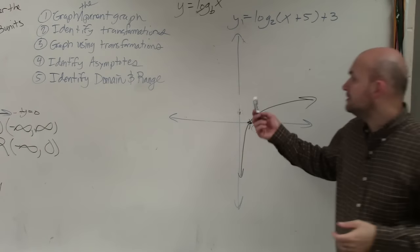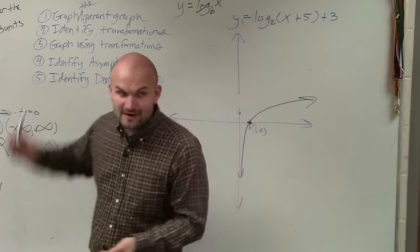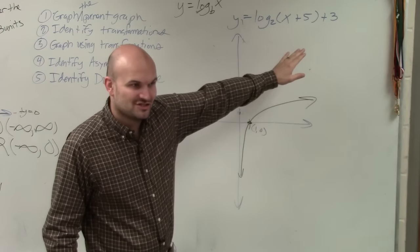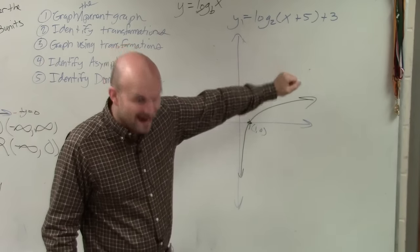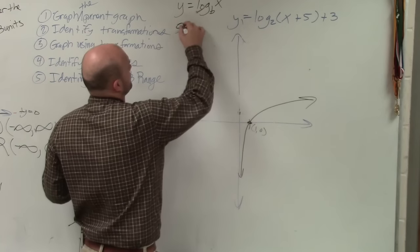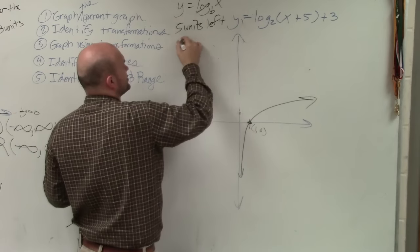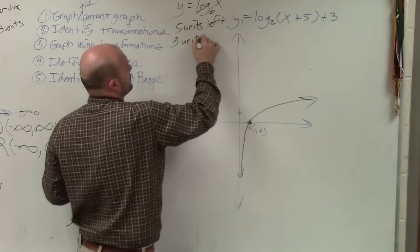So now we graph the parent graph. Now let's identify the transformations. So now we have plus 5, which is now going to shift the graph 5 units left. And plus 3 is going to do? Up 3.